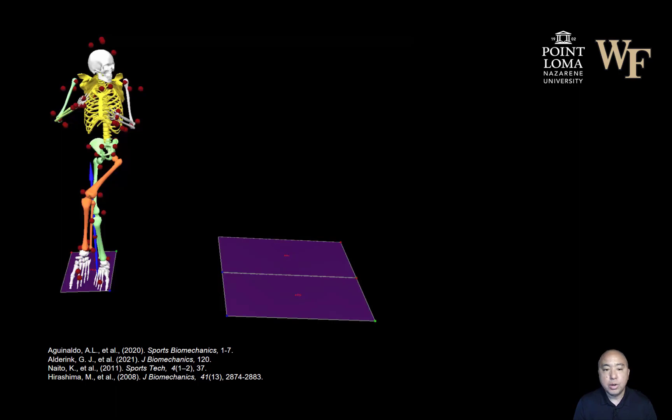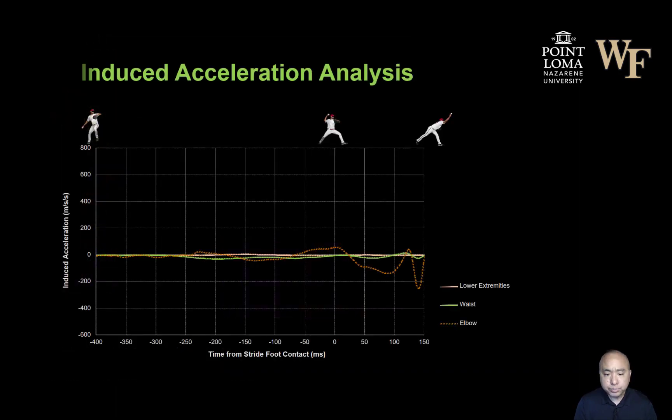So using that induced acceleration analysis, we can then break down or decompose those components that directly contribute to the acceleration of throwing arm. You can see here I have displayed for one representative pitch induced acceleration of throwing arm throughout the pitching motion. I've got the curves for the lower extremity, the waist which is really the pelvis, as well as the elbow.